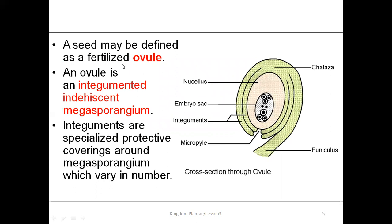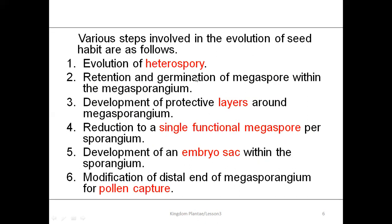A seed is defined as a fertilized ovule, and an ovule is an integumented indehiscent megasporangium. Integuments are specialized protective coverings around the megasporangium, which may vary in number.